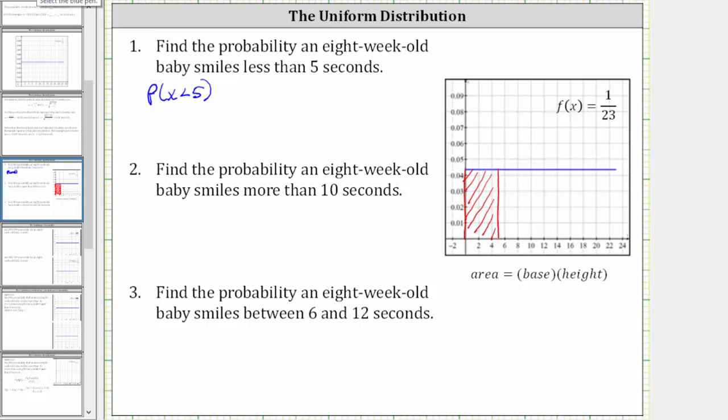So for the probability that x is less than five, we can see the base is equal to five. If we want, we can find the base by taking the right endpoint and subtracting the left endpoint, which in this case is just five minus zero.